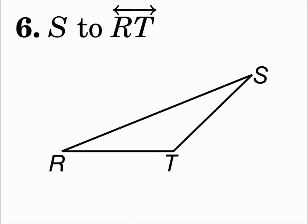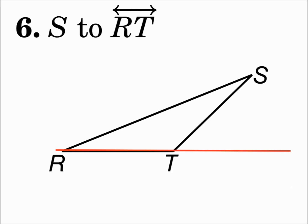Number 6: From point S to line RT. This one can't be done inside the shape because you can't hit it at a right angle, so we're going to have to extend line RT. When you extend it, now you can draw from point S to line RT — draw straight to it and hit it at a right angle. Remember, these distances are the shortest distances from the point to the line, and the shortest distance is the one that is perpendicular to the line.